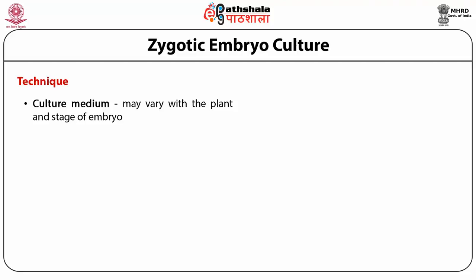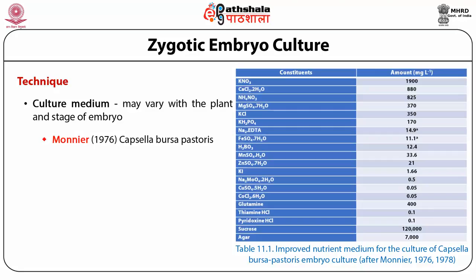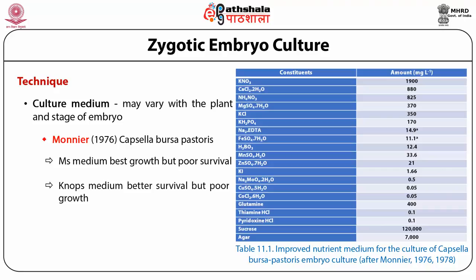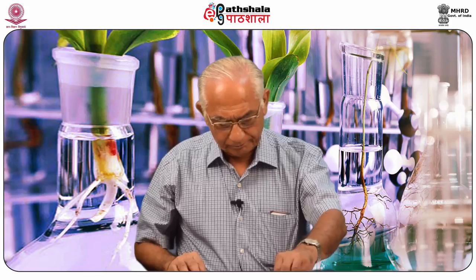The culture medium may also vary with the plant and stage of embryo. Mostly MS medium has been used. Monier found that in Capsella bursa-pastoris, MS medium supported the best growth of the embryo, but survival was low. On the other hand, a NOPS medium, which is a low salt medium, showed better survival but poor embryo growth. Therefore, he developed a new culture medium in which potassium and calcium ions were higher than in MS, and ammonium ions were lower.